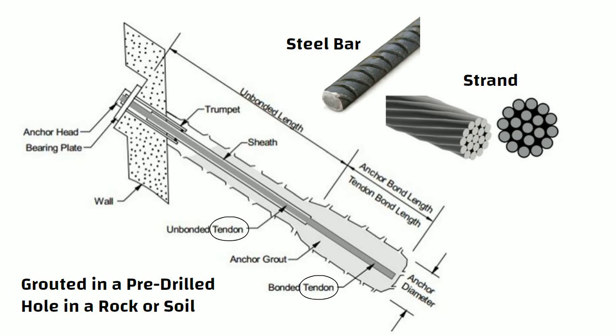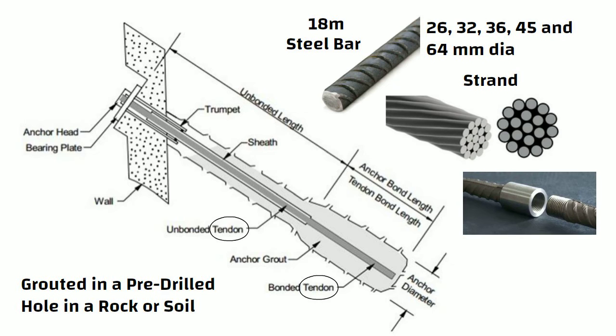Bar tendons are commonly available in 26 mm, 32 mm, 36 mm, 45 mm and 64 mm diameters in uncoupled lengths up to approximately 18 meters. For lengths greater than 18 meters, couplers may be used to extend the tendon length.